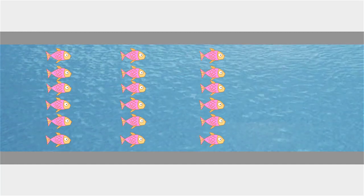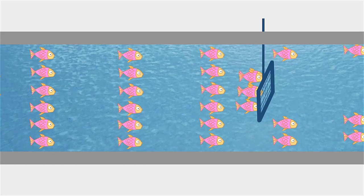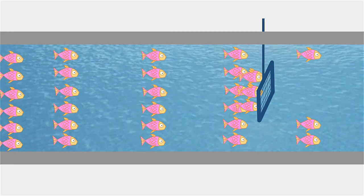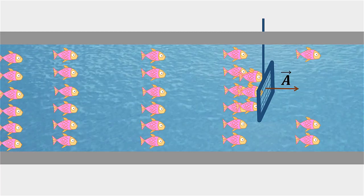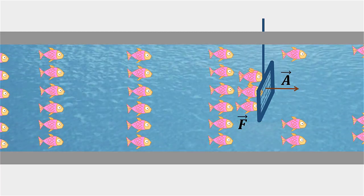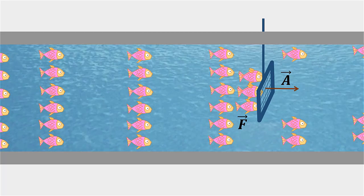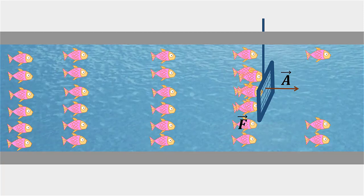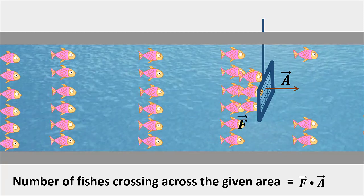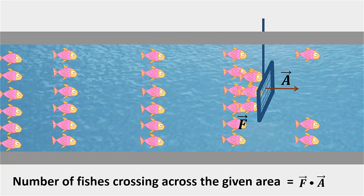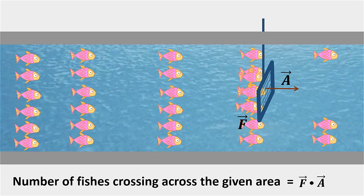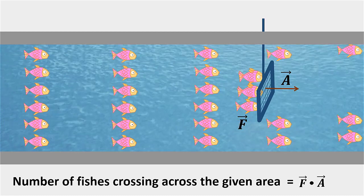Let us consider some lines of fishes crossing through a water column. Place a net there and try to find out the number of fishes crossing in that net. If vector A be the area vector and vector F is the fishing density crossing area vector A, then the number of fishes crossing across the given area equal to fish intensity dot area. This gives the number of fishes crossing per area. Something crossing per area can be called as flux. So this can be called as fish flux.